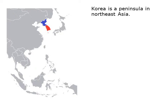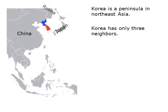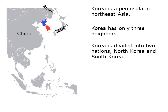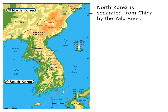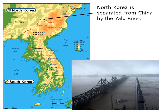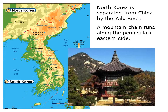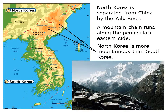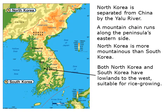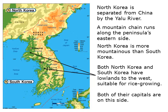Korea is a peninsula in Northeast Asia with only three neighbors: China, Japan, and Russia. Korea is divided into two nations — North Korea and South Korea. North Korea is separated from China by the Yalu River. A mountain chain runs along the peninsula's eastern side, making North Korea more mountainous than South Korea. Both nations have lowlands to the west suitable for rice growing, and both capitals are located on those west lowlands.